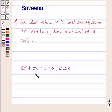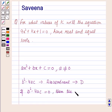The nature of the roots depends entirely on the value of the expression b square minus 4ac, which is also called discriminant and is noted by the letter D. If b square minus 4ac equals 0, then the roots of the equation are real and equal.